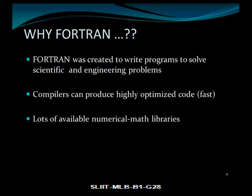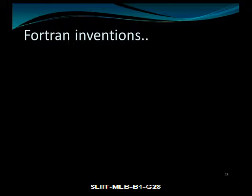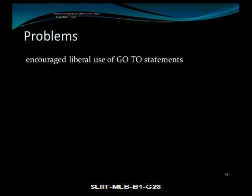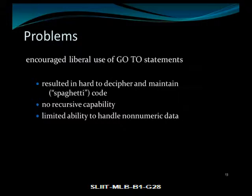Fortran was created to write programs to solve scientific and engineering problems. Compilers can produce highly optimized code that is fast, with lots of available numerical math libraries. Fortran introduced integer and floating point variables, array data types for math computations, and subroutines and functions. The Fortran language encouraged liberal use of GOTO statements which resulted in hard to decipher and maintain code, no recursive capability, and limited ability to handle non-numeric data.